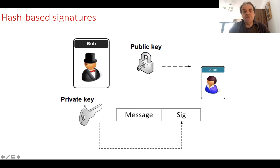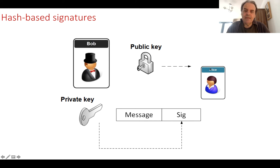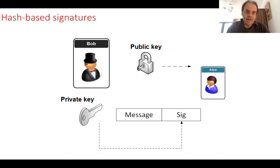With hash-based signatures, we have a message, and Bob will use his private key to create a hash signature. He will then pass his public key to Alice, and Alice will check the signature with the public key. We're going to look at one-time hash-based signatures, where we can only use the public and private key once, and then we have to recreate them again.